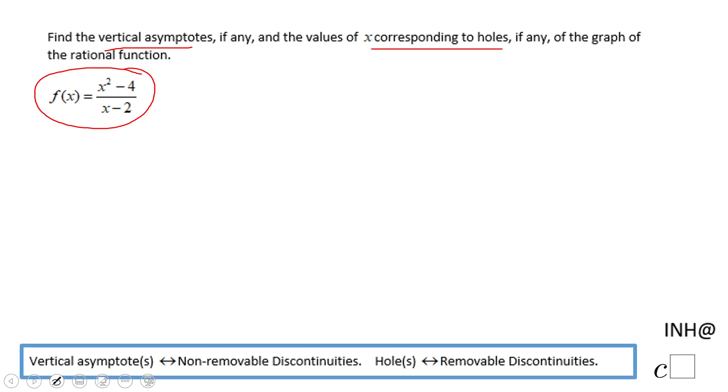For finding the asymptotes or the holes we need to find a discontinuity, and that can be done by taking the denominator, in this case x minus 2, and making it equal to 0. If we solve this one we have x equals 2. So this is a discontinuity.